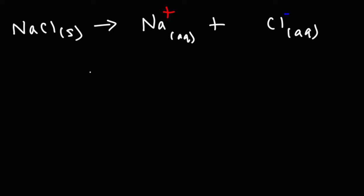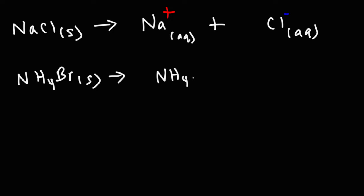Now let's move on to the next example: ammonium bromide. Write the dissociation equation for that. Ammonium is a polyatomic ion — you can't break it apart — and it has a plus 1 charge. This is something you need to commit to memory. I recommend searching 'polyatomic ions organic chemistry tutor' on YouTube for a full list. Bromine, like chlorine, is in the same column of the periodic table, so it has a 1 minus charge.